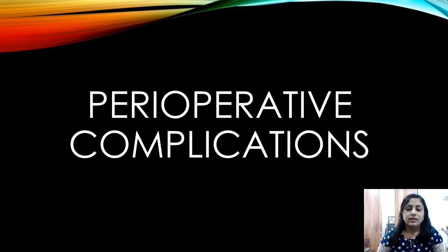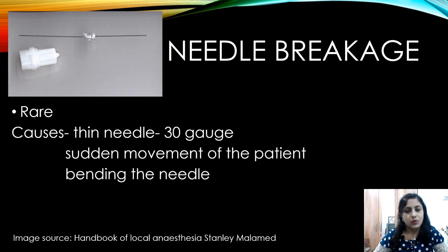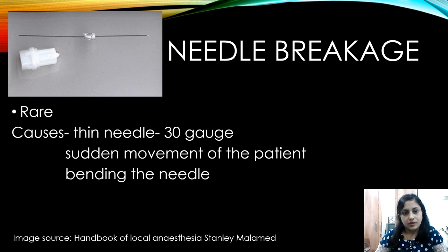Let's look at the perioperative complications that can happen during surgery. When we give local anesthesia, a complication that can happen is needle breakage. The reasons for this are if we use a thin needle, if the patient suddenly moves, or if you bend the needle while giving the local anesthesia. You should tell the patient that if there is any discomfort, they should raise their hand and not move suddenly.